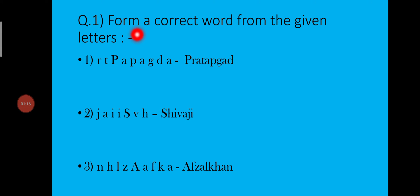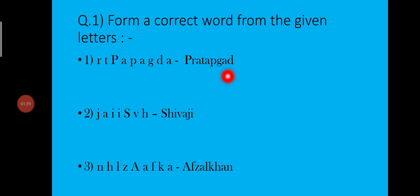Question number 1: Form a correct word from the given letters. Here, children, letters are given. With the help of this, you have to form a correct word. The 1st one is Pratavgad. 2nd: Shivaji. 3rd: Abjal Khan.